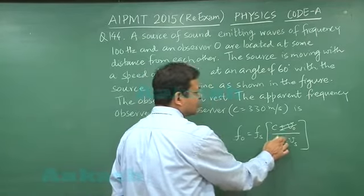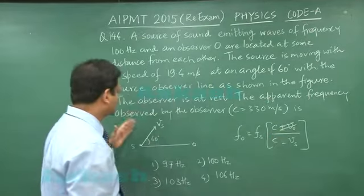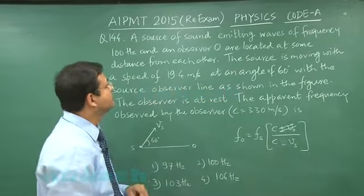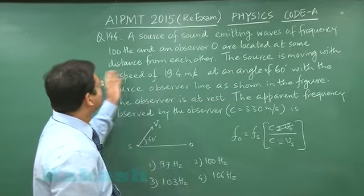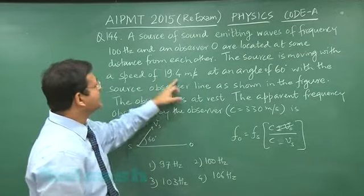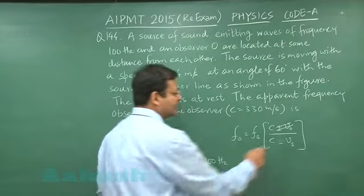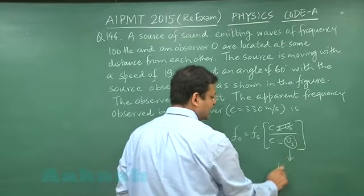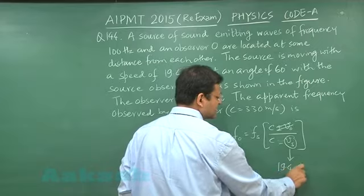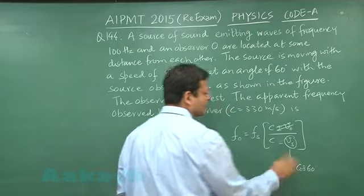And that too, whatever velocity has been given, it is cos 60 component you are supposed to take. Here it is said that the source is moving with a speed of 19.4. So this v_s will be written as 19.4 cos 60 degree. This is what you have to mention.